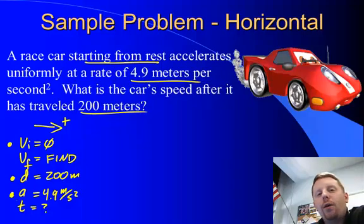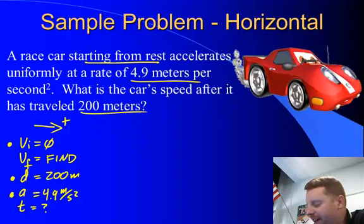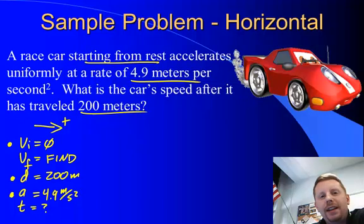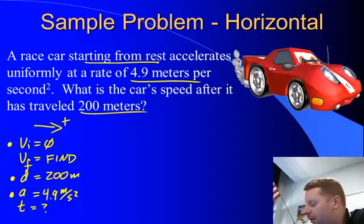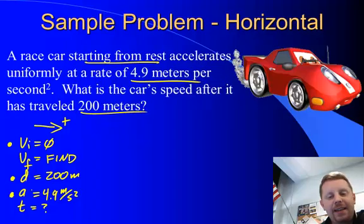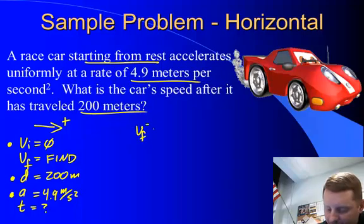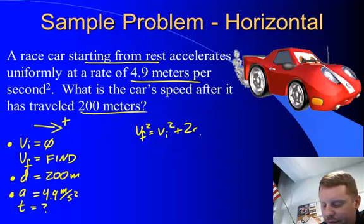Once we know those three, we can always solve for the other two. Now we're looking for VF. So if we want VF, we need to choose one of those kinematic equations that has most of what we're after and most of the information. So the equation that will fit best here, VI, VF, D, and A, we have a kinematic equation that has just those four things in it. It is VF squared equals VI squared plus 2AD.